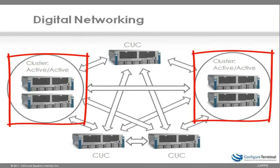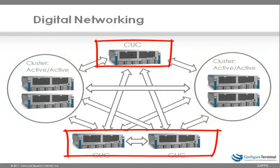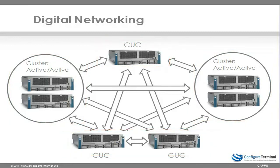Visually, in this example, we have two clusters and three standalone Cisco Unity Connection servers networked together. There are some major advantages to using digital networking over VPIM, as well as some disadvantages, and I'll show you a comparison in a moment. The major advantage of digital networking is that you have automatic replication of user information — in other words, directory information — from one server to another. The setup of digital networking is also very easy. You can either do it manually, which is the hard way, or use automatic digital networking, which is very simple to set up.